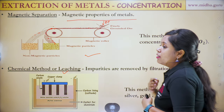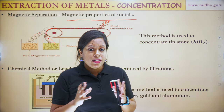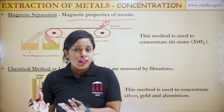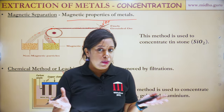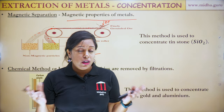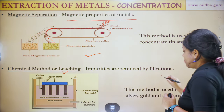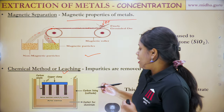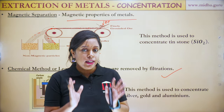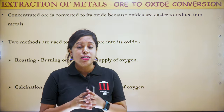The fourth method is the chemical method or leaching. In this method, a certain reagent is added in which the ore is soluble but the impurities are insoluble, or vice versa. By filtering, we can separate the ore from the impurities. This method is actually used in the extraction of aluminium, which we will study in detail in the coming slides.